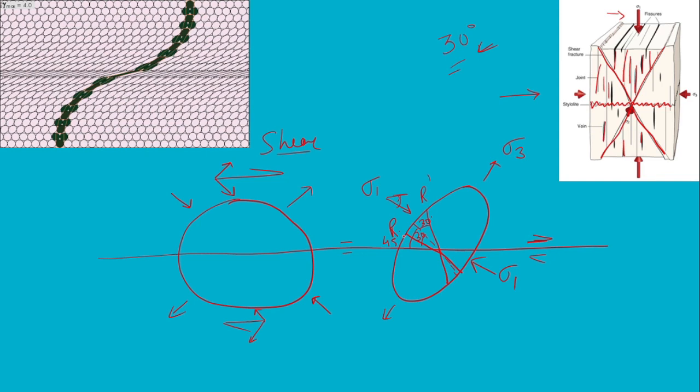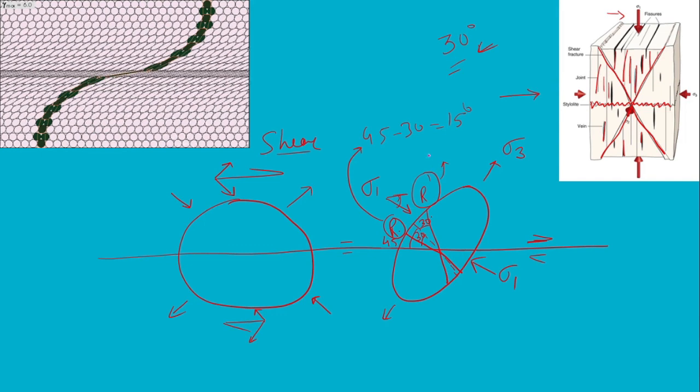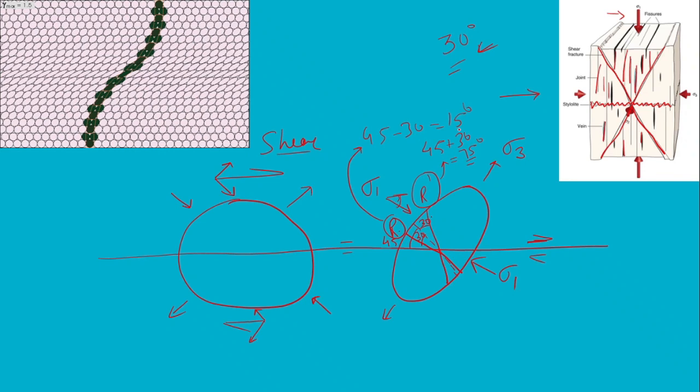As I have mentioned, these conjugate fractures develop at about 30 degrees to this main fault, sorry, to the sigma one. And this sigma one is itself at 45 degrees to the main fault. I can say this R is actually at 45 minus 30, that is about 15 degrees to the main fault. And similarly, this, as it is on the clockwise direction, it must be at 45 plus 30, that is about 75 degrees to the main fault.